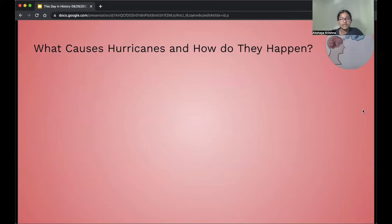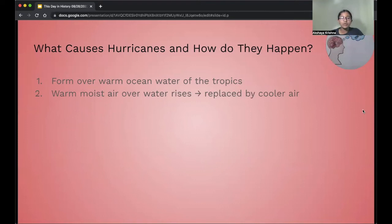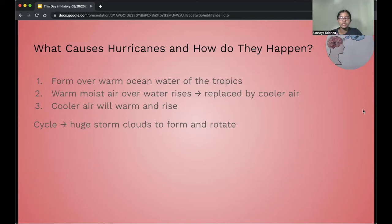Now what causes hurricanes and how do they occur? So hurricanes happen over a cycle. First step being, they form over warm ocean water of the tropics, so over the tropical water. This warm, moist air hovers over the water and it rises. This water that rises is replaced by cooler air, and this cooler air will warm and it will rise. This cycle of the warm air rising over the water and replacing it by cooler air, and then the cooler air gets warmer and rises, this cycle causes huge storm clouds to form and rotate and spin.